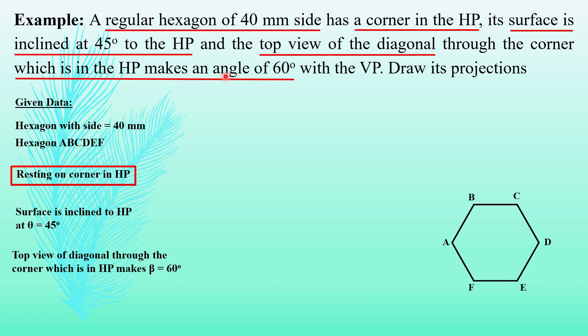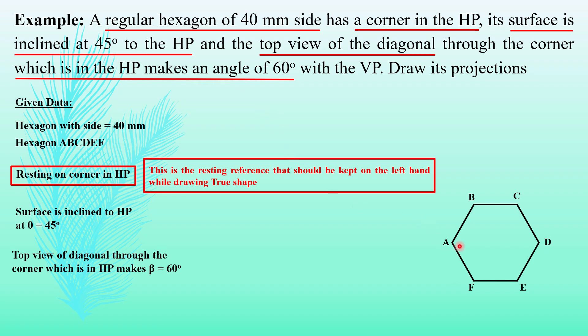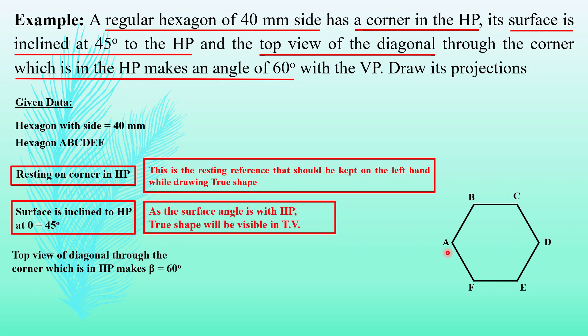Now, the resting corner in HP means this is the resting reference which should be kept on the left while drawing the true shape. Also, as the surface inclination is with HP, the true shape will be visible in top view. And the top view of diagonal making an angle 60 degrees with VP, that will be the second angle taken in the third stage.